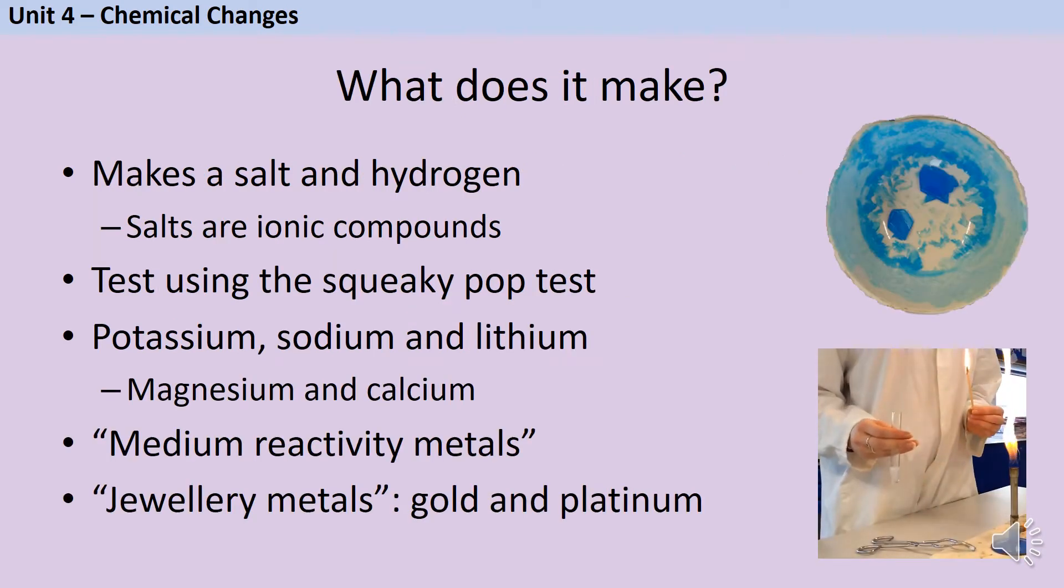When metals react with acids, two products are made. The first one is a salt, and although you might immediately think of sodium chloride, the table salt that you put on your fish and chips, that's just one example of the thousands of different chemicals that we call salts. A salt is an ionic compound, which means that it contains some metal and some non-metal.